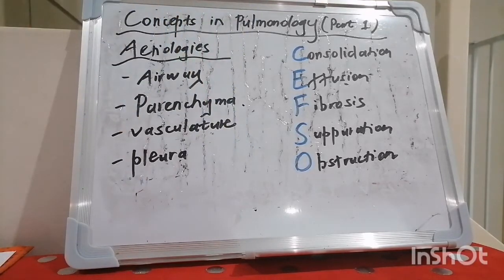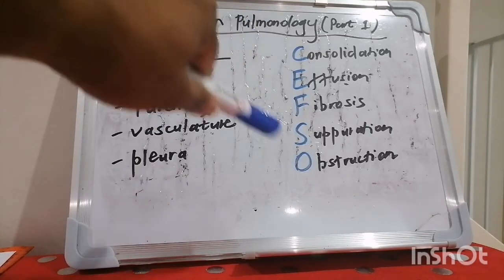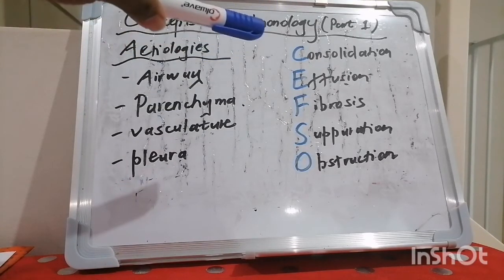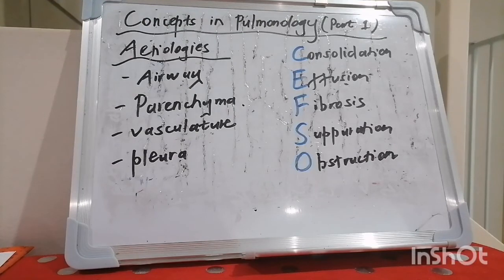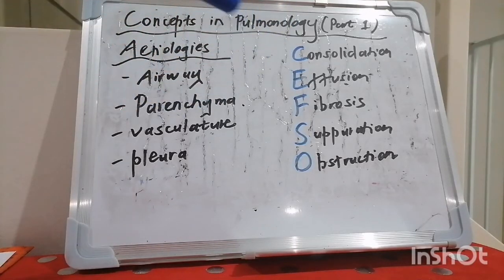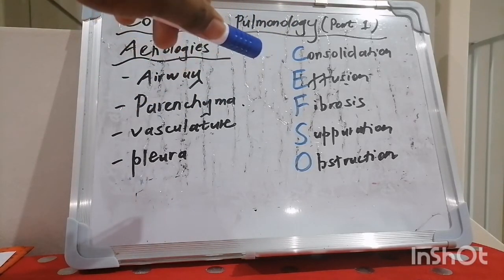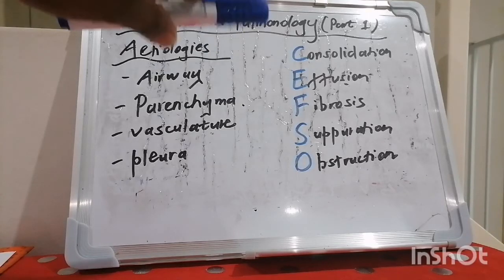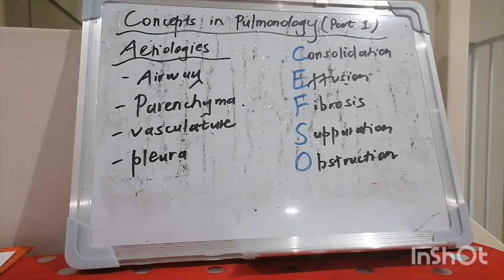In terms of the pathophysiological classification, diseases in pulmonology fit into one of five large categories. Either it's consolidation, which speaks to lobar pneumonia; or it's an effusion, which we use Light's criteria to separate into exudative or transudative etiologies. Fibrosis is usually in the way of IPF — idiopathic pulmonary fibrosis — but note that any secondary cause of lung disease, if long-standing, can result in fibrosis in some way, shape, or form.